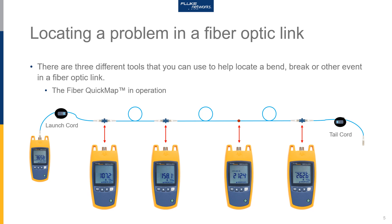With a tail cord, I'm going to be able to force the light past my last connector, so if there's a problem in the last connector I will be able to see it. Along this link, the FiberQuickMap has detected five events. The fiber itself is 366 meters long, and it has detected events at 107 meters, 158 meters, 212 meters, and 263 meters.